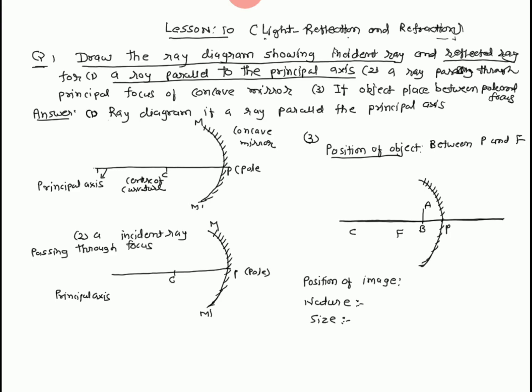The ray parallel to the principal axis — after reflection, it is passing through the focus. This is the focus. A ray parallel to the principal axis, after reflection, it is compulsory passing through the focus.